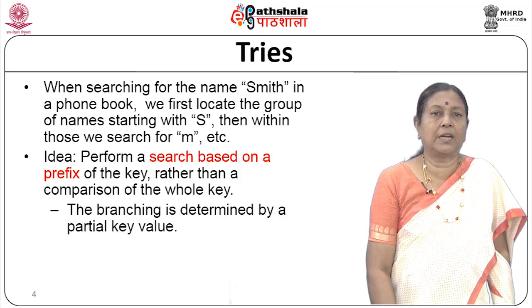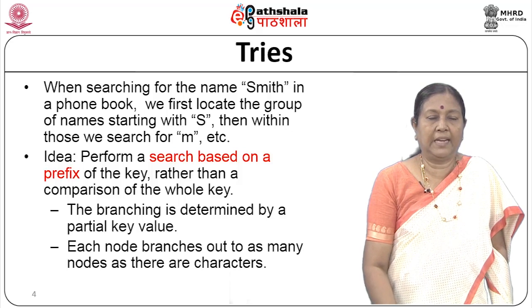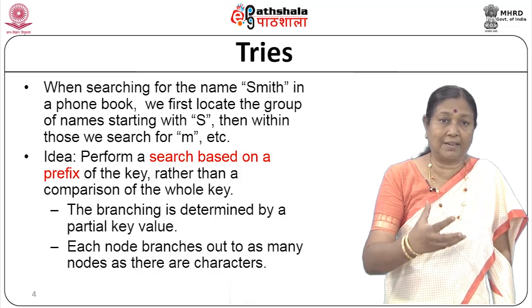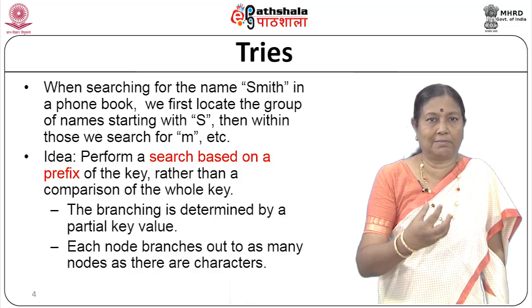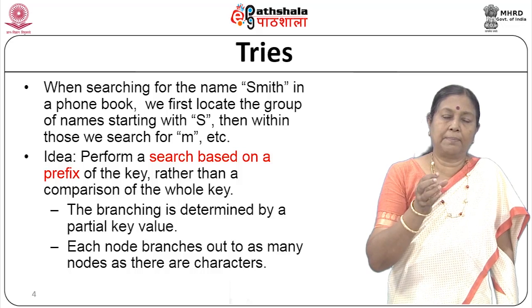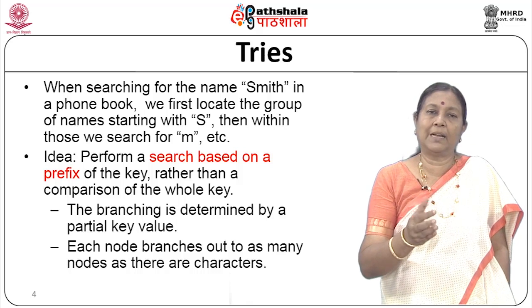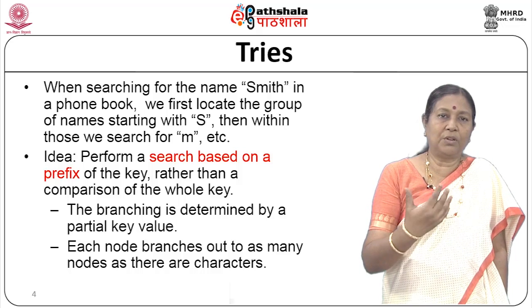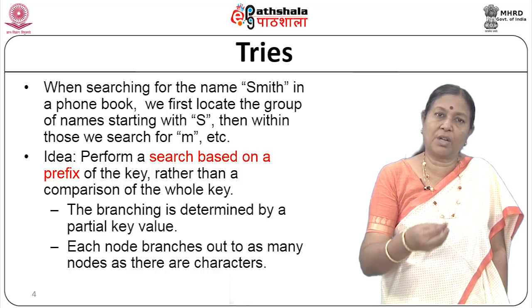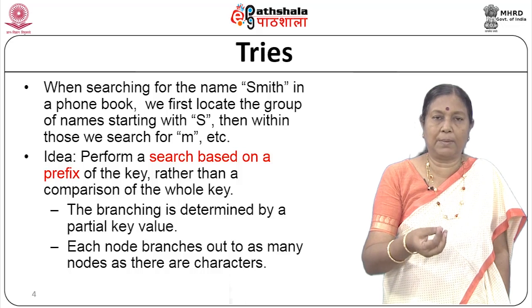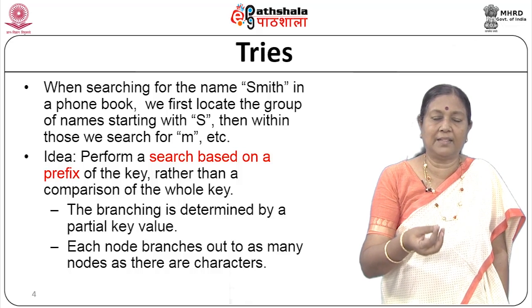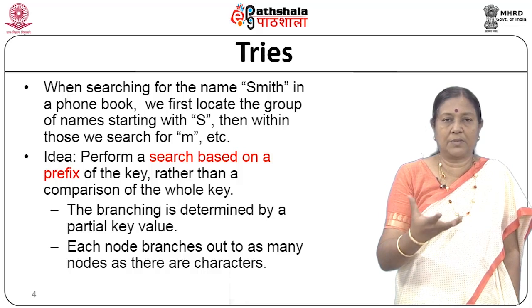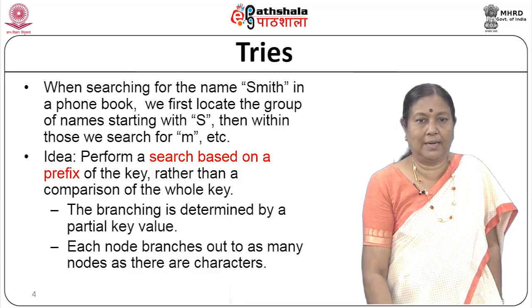In a trie, each node branches out — it is not a binary tree, not a three-way or four-way tree. The branching of the tree is determined by the number of characters that can occur in the key. Characters could be numerical numbers or alphabetic characters. Depending on how many characters exist in the key domain, that many branchings there will be.